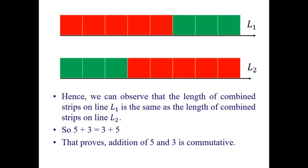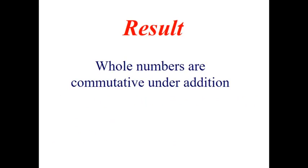So, that proves addition of 5 and 3 is commutative. That means, 5 plus 3 is equal to 3 plus 5. So, here, we have verified that whole numbers are commutative under addition. Thank you.